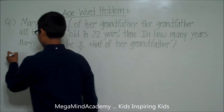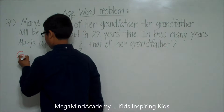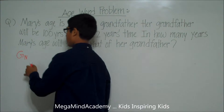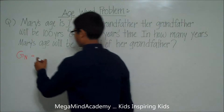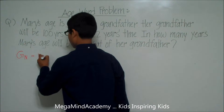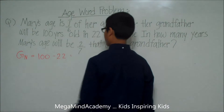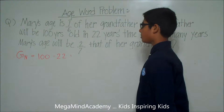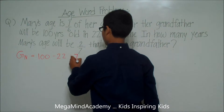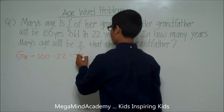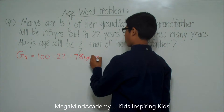The problem states that her grandfather will be one hundred years old in twenty-two years. So her grandfather's age right now, G for grandfather, is equal to one hundred years minus twenty-two years, because in twenty-two years he will be one hundred years old. This is equal to seventy-eight years old. So her grandfather is seventy-eight years old.